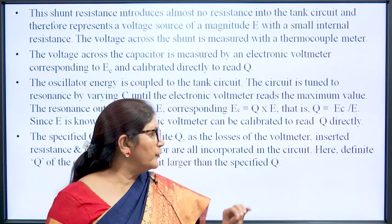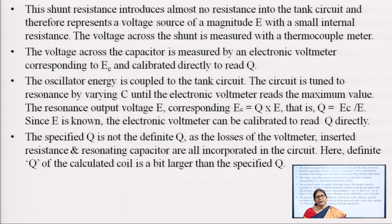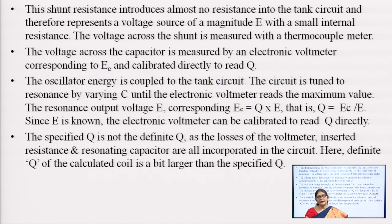The value shown by the meter includes all values — the capacitor value and the source resistance — so it incorporates the circuit Q also. The displayed Q may be less than the actual Q of the coil or capacitor.